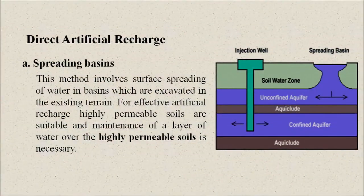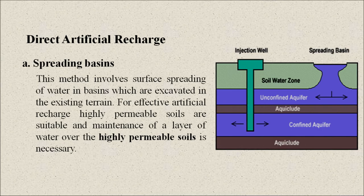The first direct method is spreading basins. This method involves surface spreading of water in basins which are excavated in the existing terrain. For effective artificial recharge, highly permeable soils are suitable, and maintenance of a layer of water over the highly permeable soils is necessary.